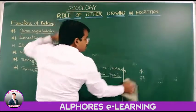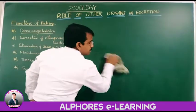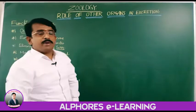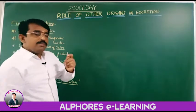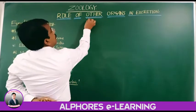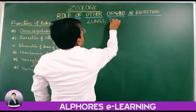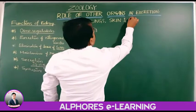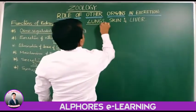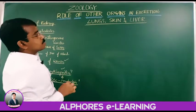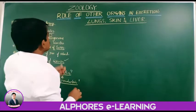Now we'll move on to the other organs that are involved in excretion. So far we have discussed the role played by the kidneys. Now, besides the kidneys, the lungs, the skin, and the liver are also playing a vital role in excretion. This is the role of other organs in excretion.